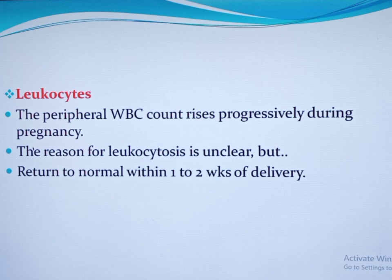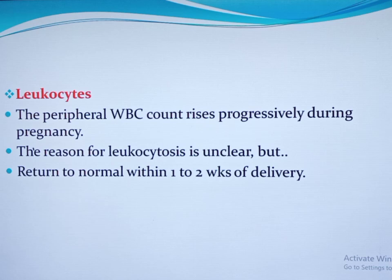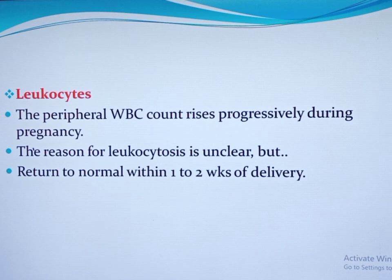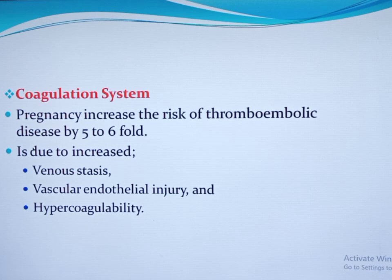Regarding leukocyte count, the peripheral WBC count rises progressively during pregnancy. In the first and second trimester it reaches up to 10,000; in the third trimester, up to 12,000; and during labor, the WBC count may reach up to 20,000 to 30,000. For this reason, we do not rely on WBC count for the diagnosis of infection during labor. The exact reason for this increment is not clear but is attributed to steroid and estrogen effects. It returns to normal within one to two weeks after delivery.